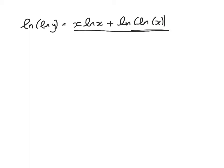So now we've got this into a form that we can differentiate. So we'll start with the left hand side. This is a function of y, so we need to use implicit differentiation, and we've got a chain rule thing going on. We've got the log of the log of y.